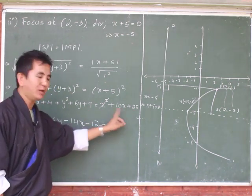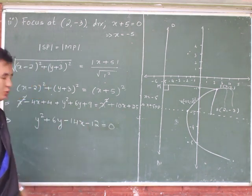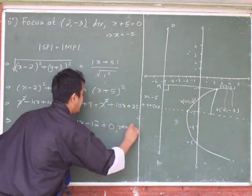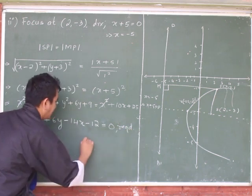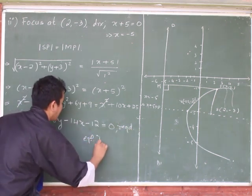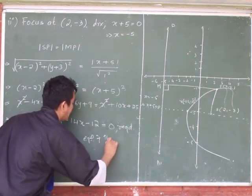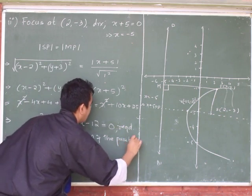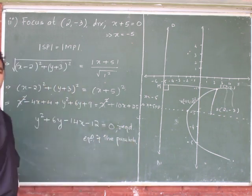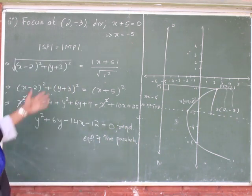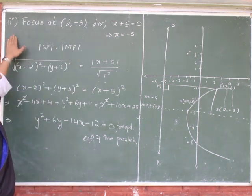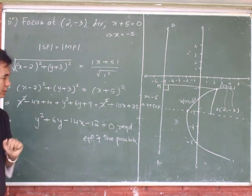So this is the required equation of the parabola: y squared plus 6y minus 14x minus 12 equals 0. That's it — thank you. In the next video we will do question number 3, Roman numeral 3. Please have a look, thank you.